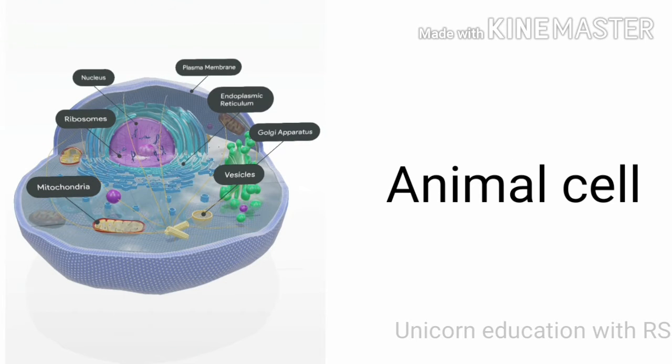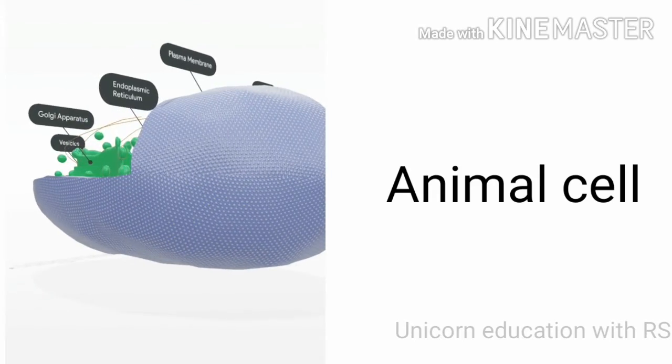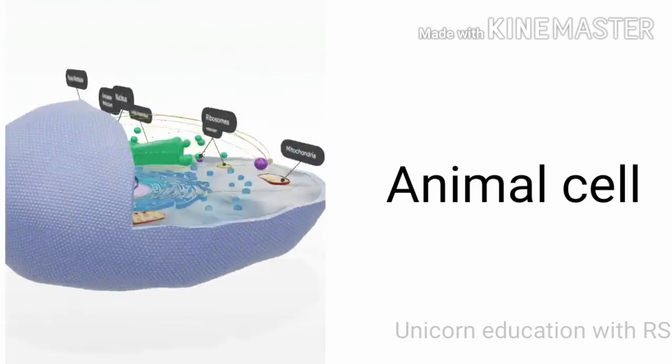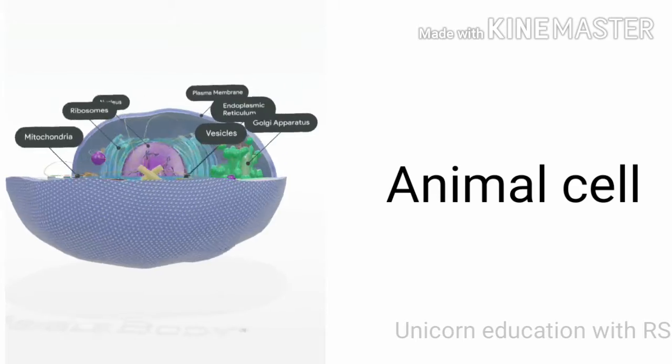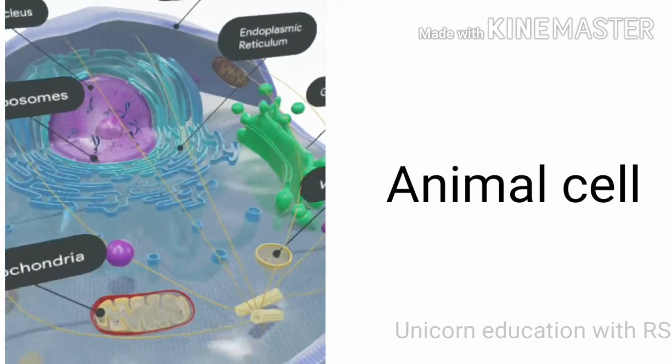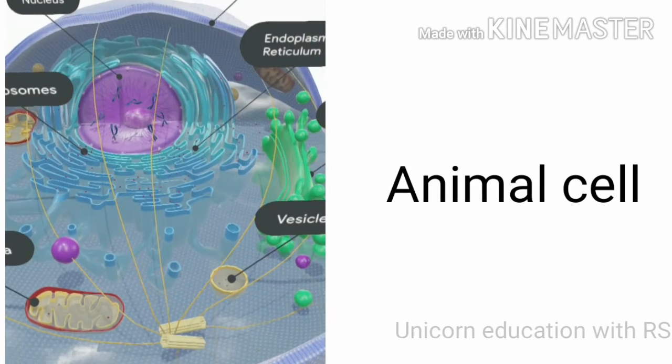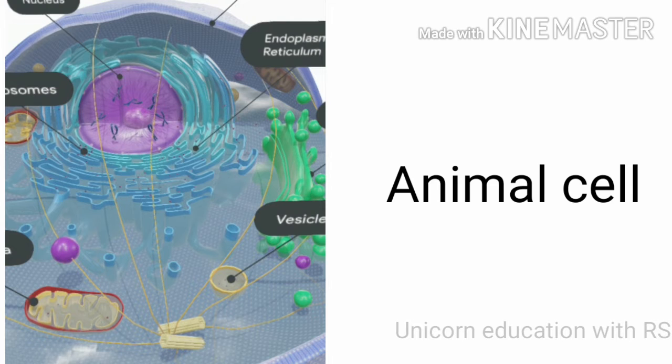This is an animal cell. It is fully covered by cell membrane, plasma membrane, and cell wall too. The image in center which is in violet color is known as nucleus. The nucleus is surrounded by endoplasmic reticulum.